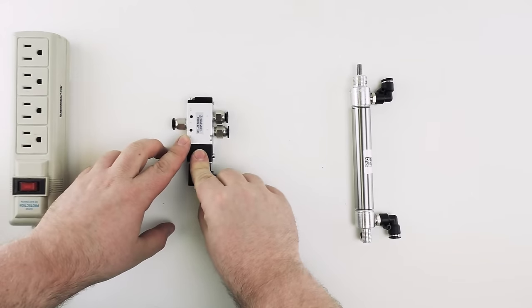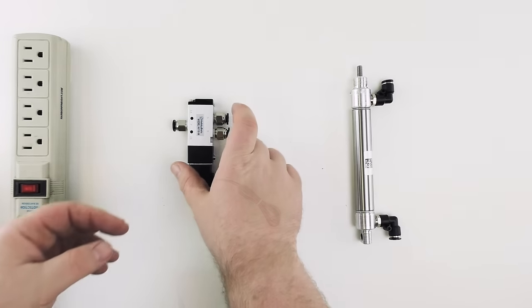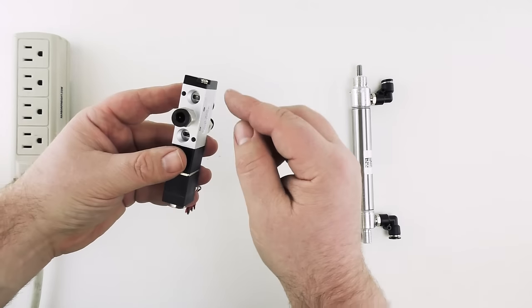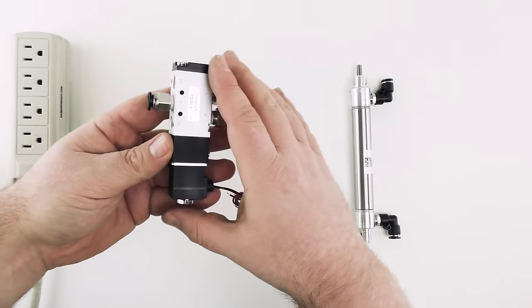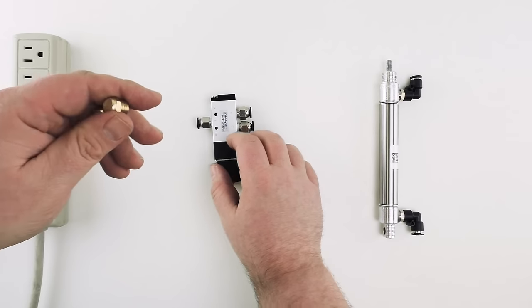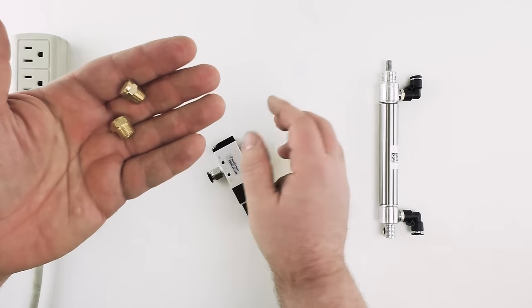We have our fittings installed into our solenoid. The last thing that we need to do for our solenoid is install some mufflers into the exhaust ports. For the exhaust ports of the solenoid we have these two breather vents.